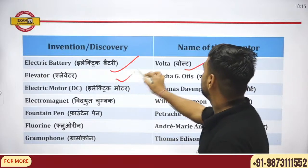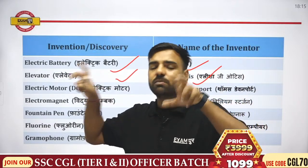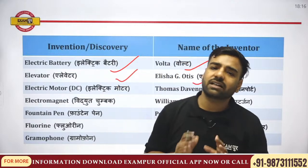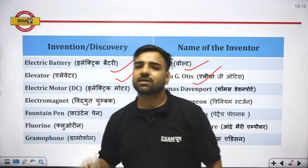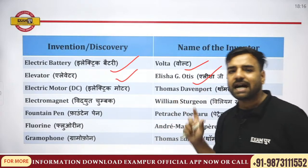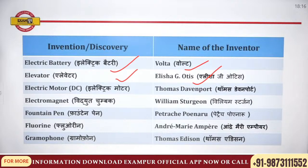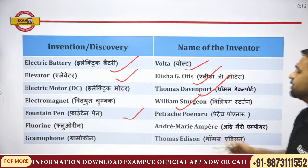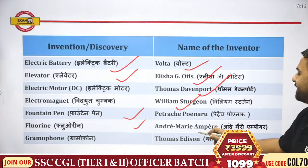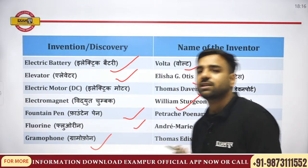Elevator was discovered by Elisha G. Otis. DC motor was discovered by Thomas Davenport. Electromagnet was discovered by William Sturgeon. Fountain pen was discovered by Petrarch. Fluorine was discovered by André-Marie Ampère. We have tricks for each of these, but I want your interaction to explain them properly.